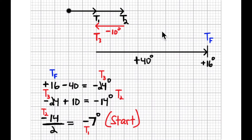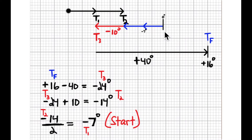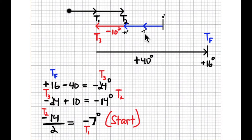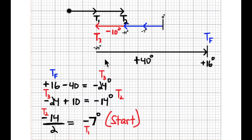So going back to the diagram, from this point I'm going to move 14 units to the right — 5, 10, 11, 12, 13, 14 units. Starting at negative 7 degrees, that doubles to negative 14 degrees. The arrow diagram now reads correctly: negative 10 degrees added to negative 14 degrees is negative 24 degrees, and negative 24 degrees increases by 40 degrees and ends at positive 16 degrees.